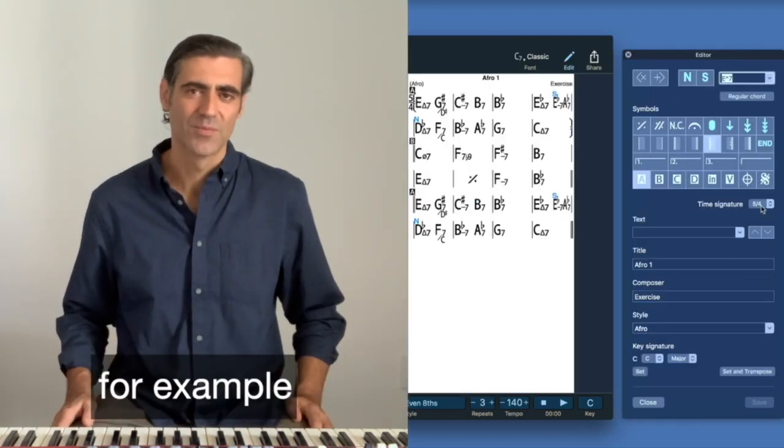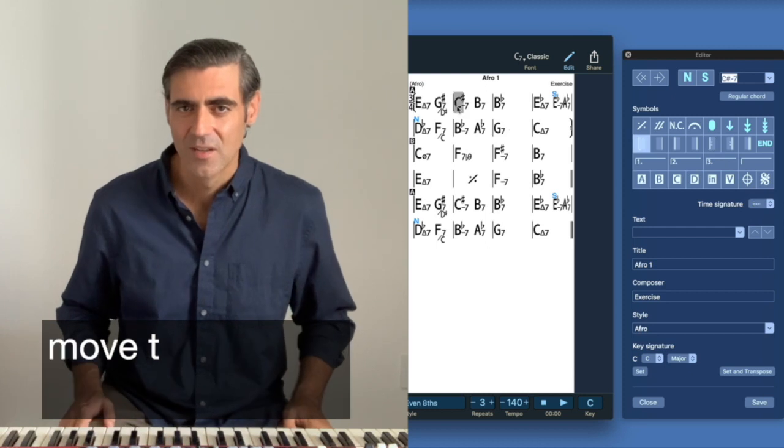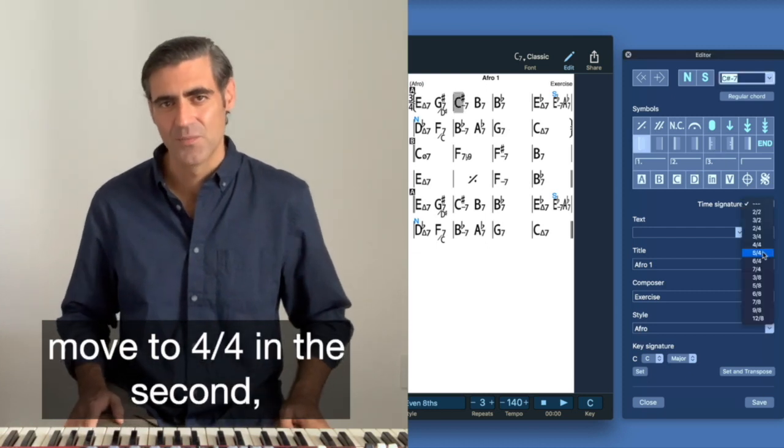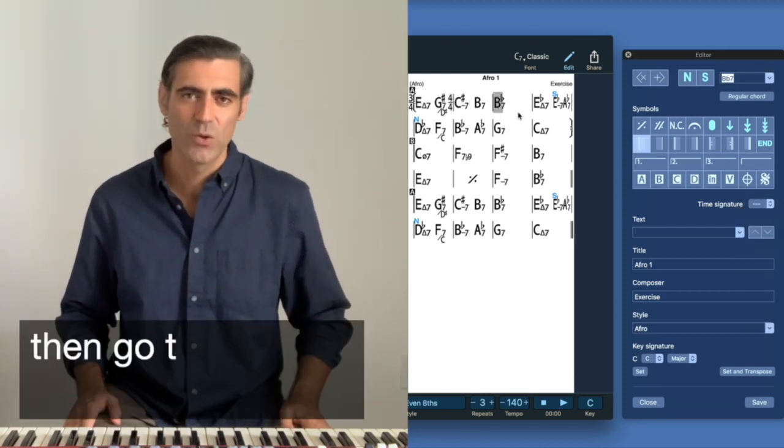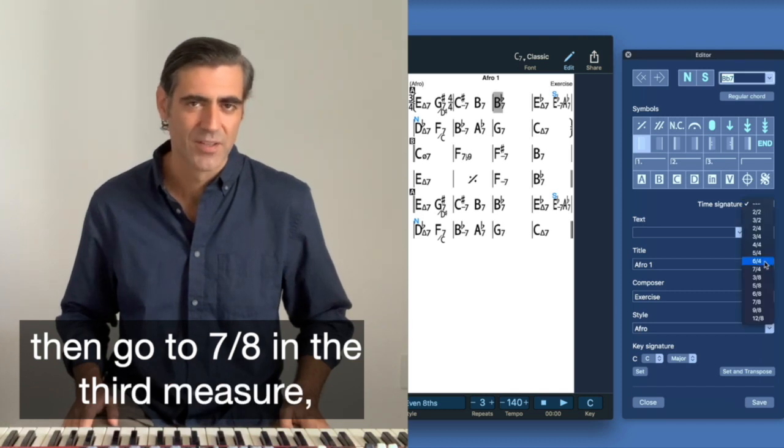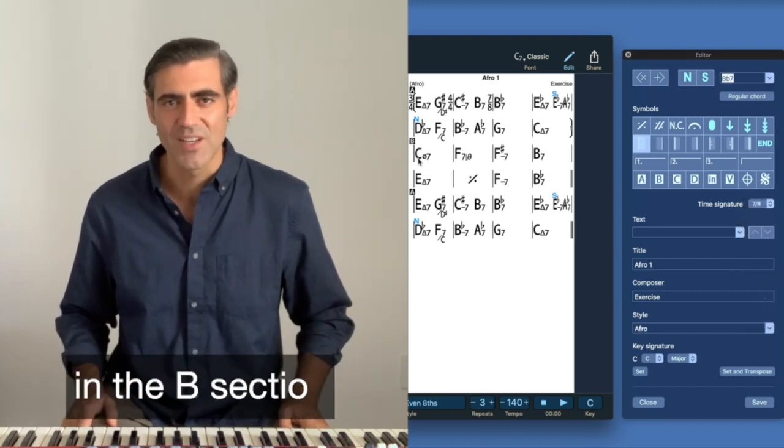For example, we start with 3-4 in the first measure, move to 4-4 in the second, then go to 7-8 in the third measure and let's switch to 3-4 in the V section.